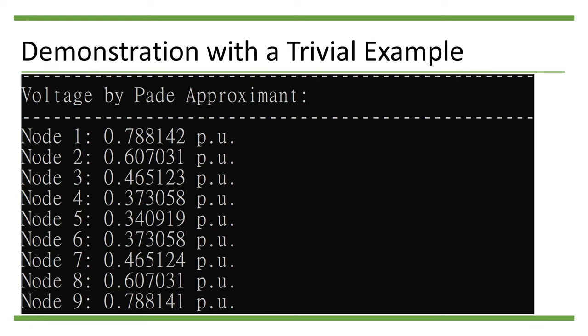In the second part of the output, we can see that the Padé approximant of the voltage yields slightly lower values compared with the direct summation.